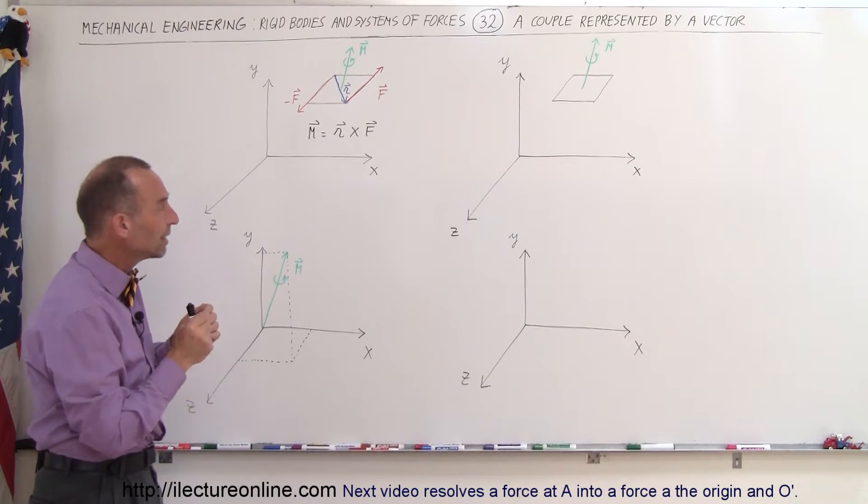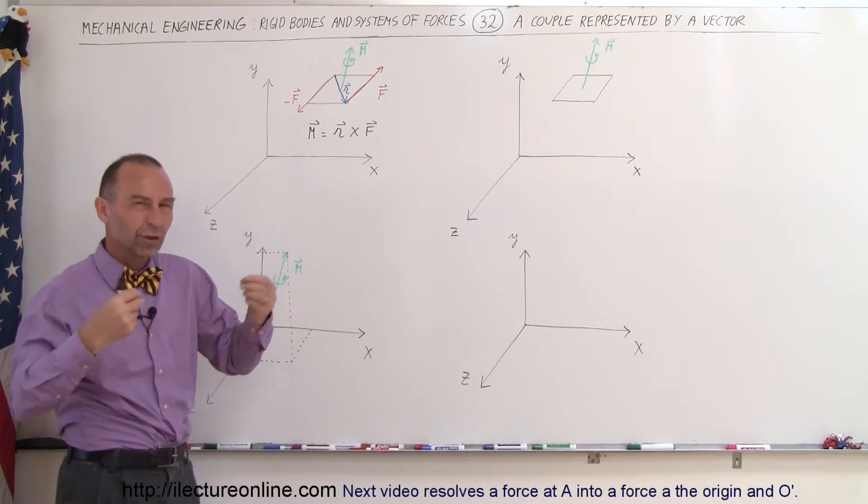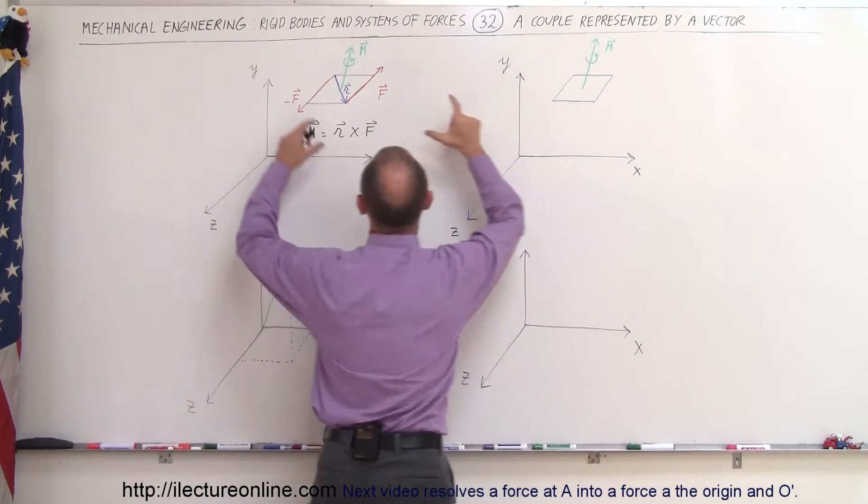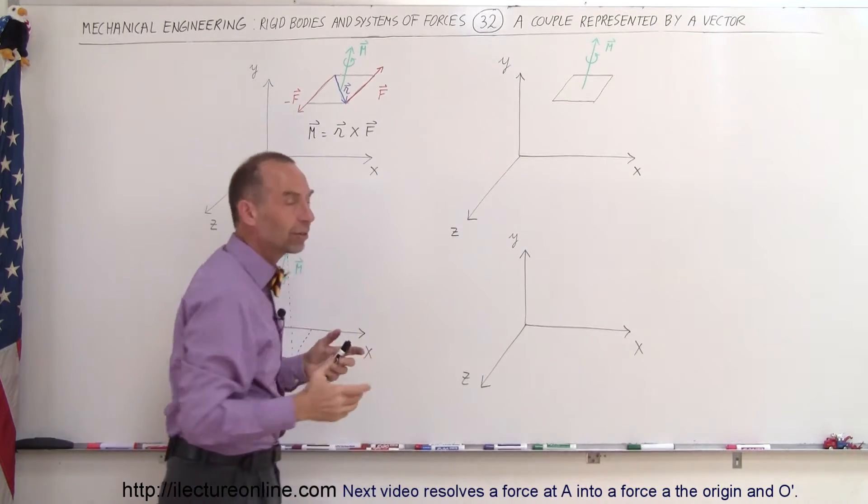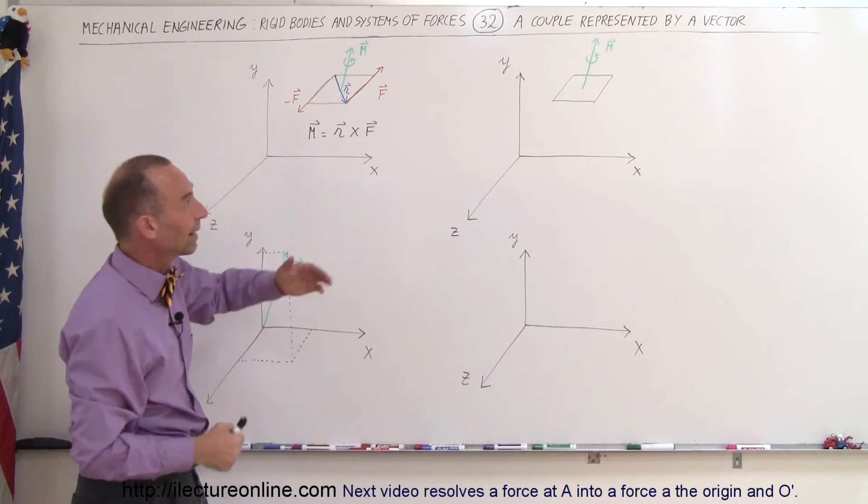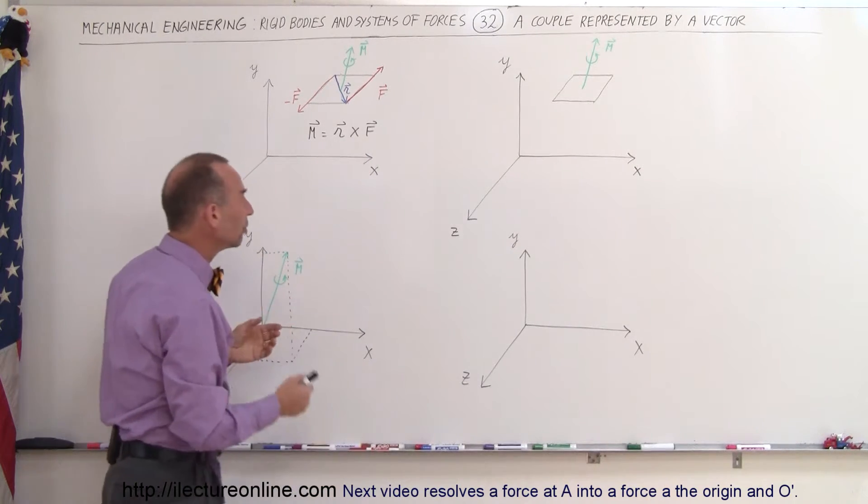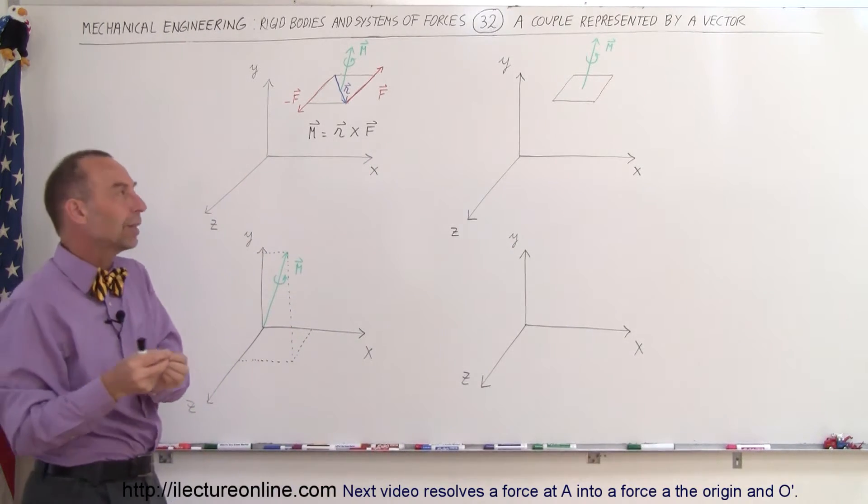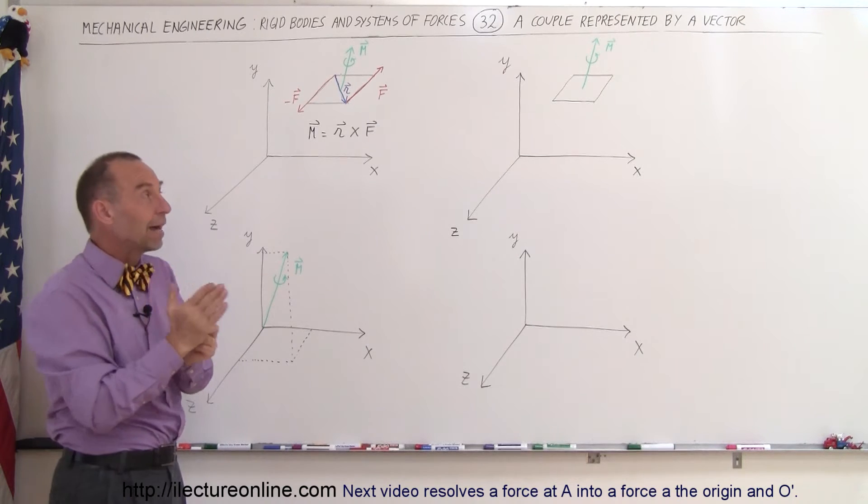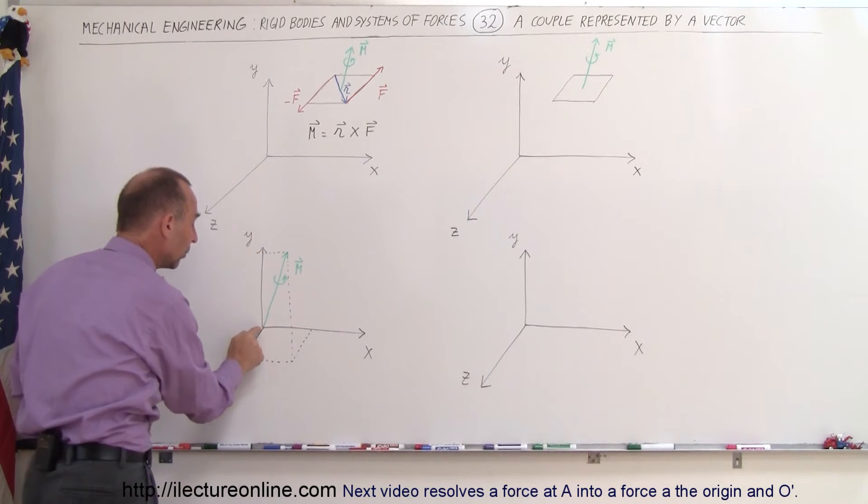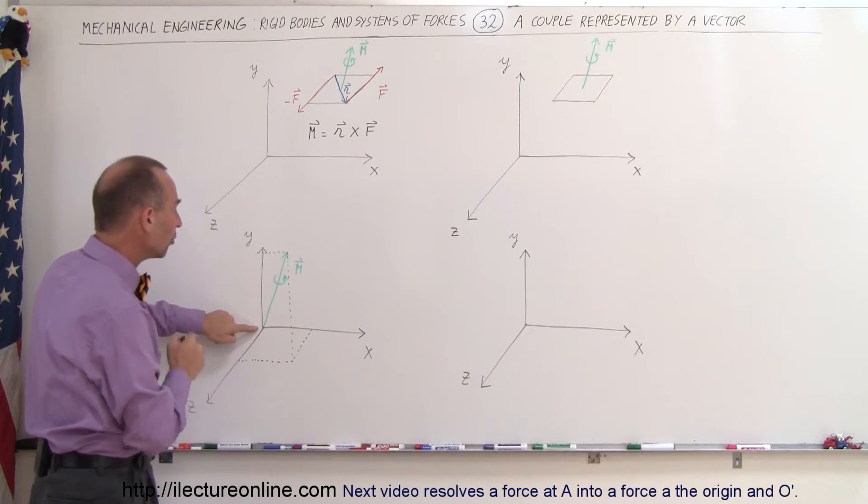Now if we then remove the two forces, the couple, and just draw the moment alone, this moment can be simply a representative of those two vectors forming a couple. So we can say that this is the result of a couple. It forms a moment. Now the moment can be positioned anywhere we like because it doesn't really matter if it's on the plane or anywhere else. We can take the moment and move it right there with the beginning of the moment at the origin.